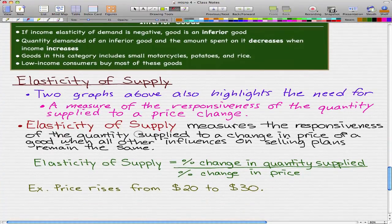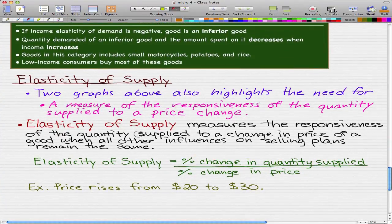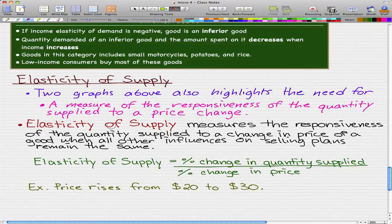The elasticity of supply measures the responsiveness of the quantity supplied to a change in price of a good when all other influences on selling plans remain the same. In other words, the elasticity of supply looks at how the providers respond to a change in price.